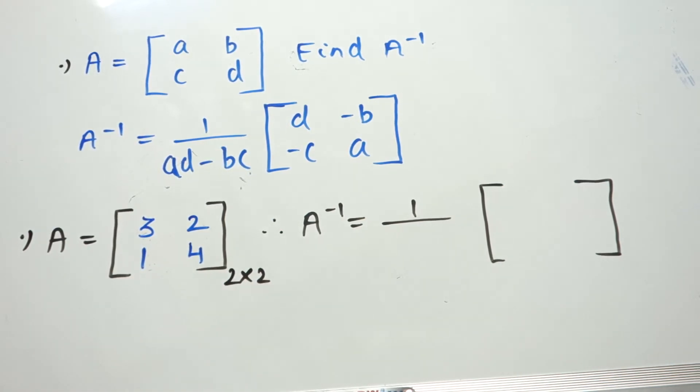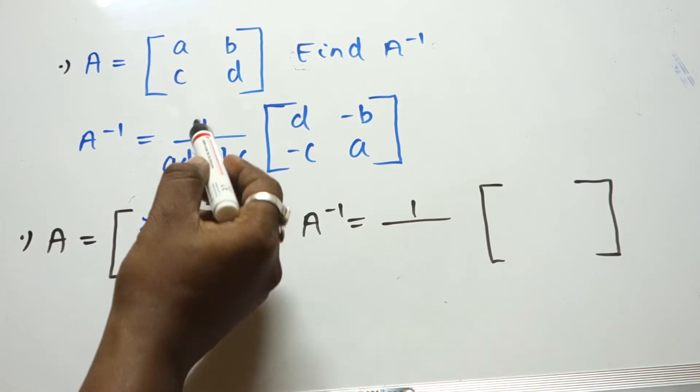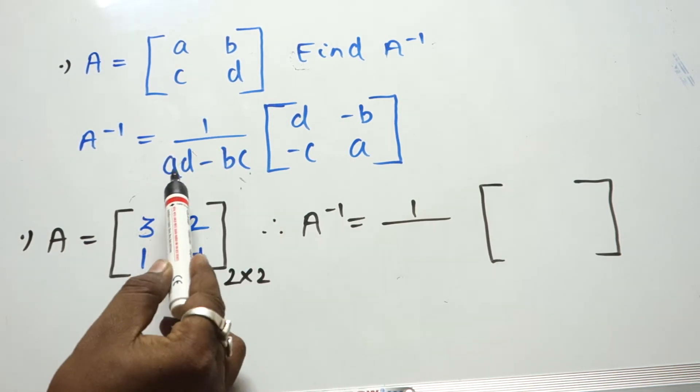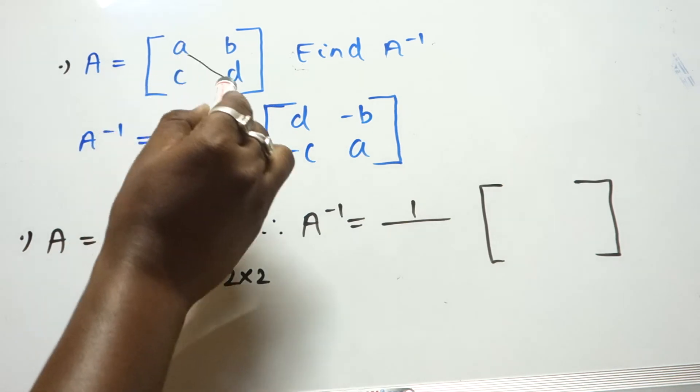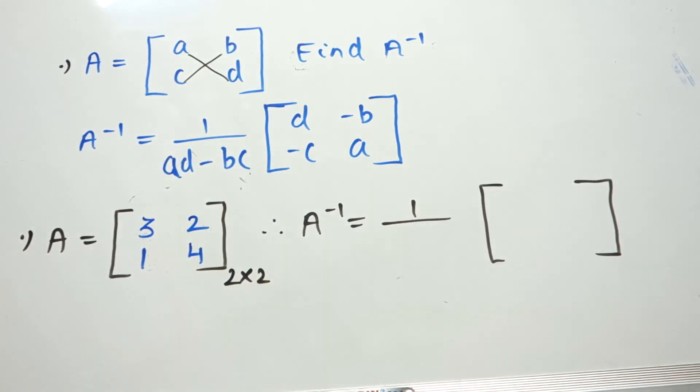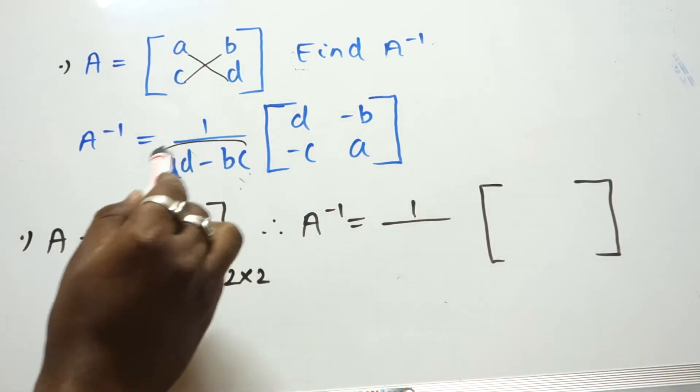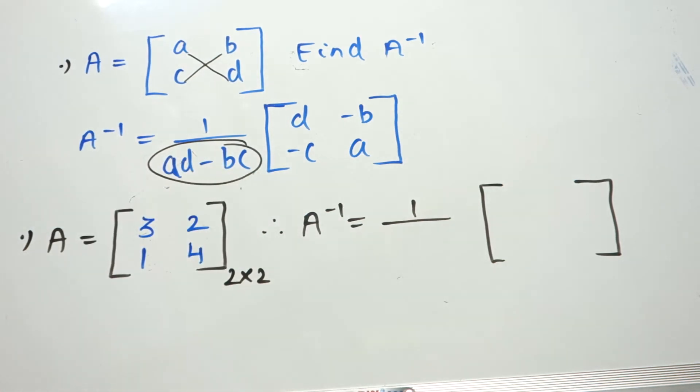When we have a 2x2 matrix and need to find A inverse, there is a trick. The trick is 1 upon AD minus BC. This section is known as the determinant of A.